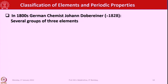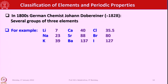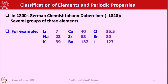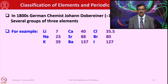Let us look into the classification of elements and periodic properties before the modern periodic table. In 1800, German chemist Johann Döbereiner arranged several groups of three elements — for example, lithium, sodium, and potassium; calcium, strontium, and barium; chlorine, bromine, and iodine — and called them triads of elements.